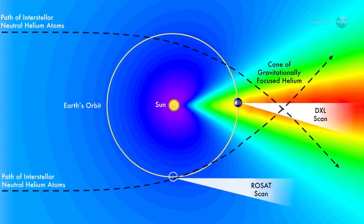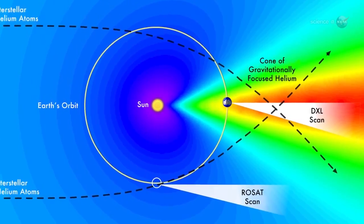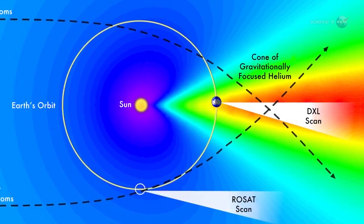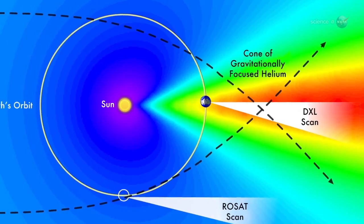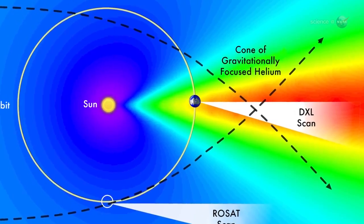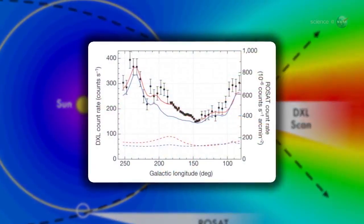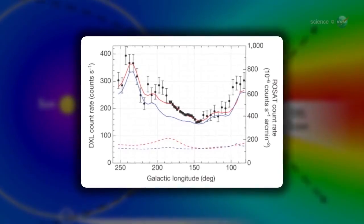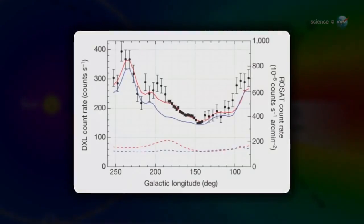The results, published online in the journal Nature on July 27, indicate that only about 40% of the soft X-ray background originates within the solar system. The rest must come from a local bubble of hot gas, the relic of ancient supernovas.